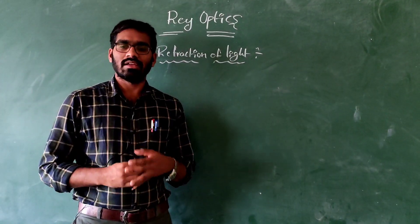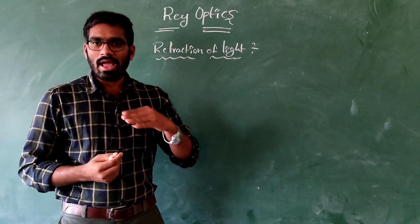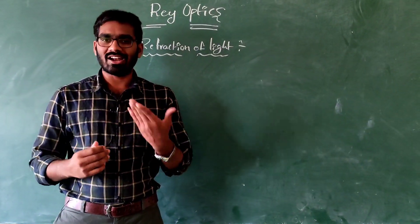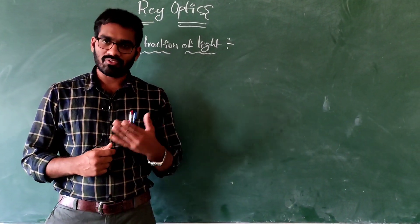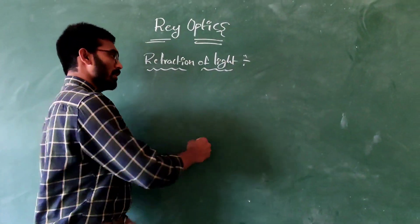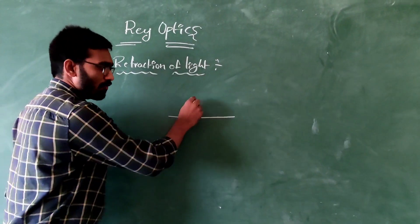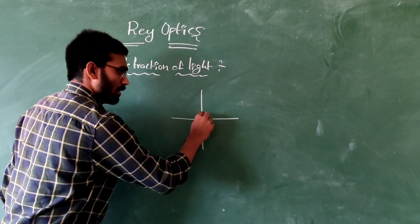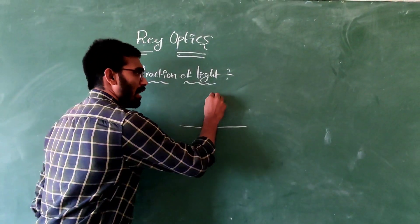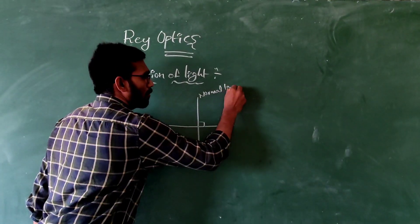What is the refraction of light? Here, a light ray passes through one medium to another medium. That light ray bends or is deviated. That phenomenon is called refraction of light. We observe the diagram here — a perpendicular line is drawn to form 90 degrees. That line is called the normal line.